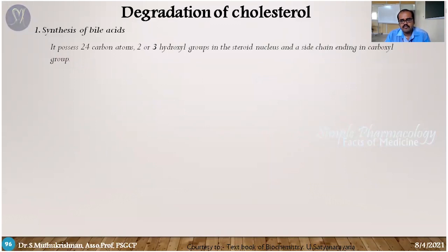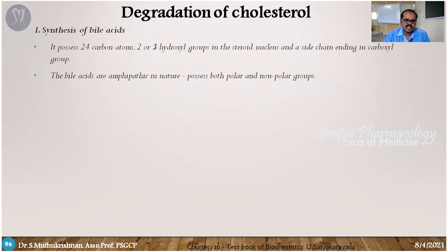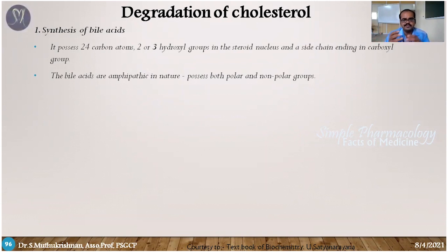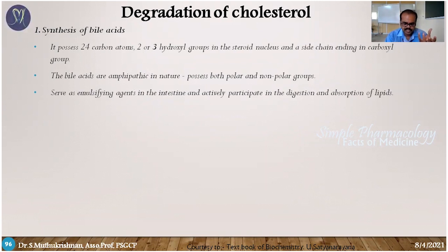Starting with bile acid synthesis: bile acids contain 24 carbon atoms in the steroid nucleus. They are amphipathic in nature, meaning they have both hydrophilic and hydrophobic properties. The key question is: what is the role of bile acids?